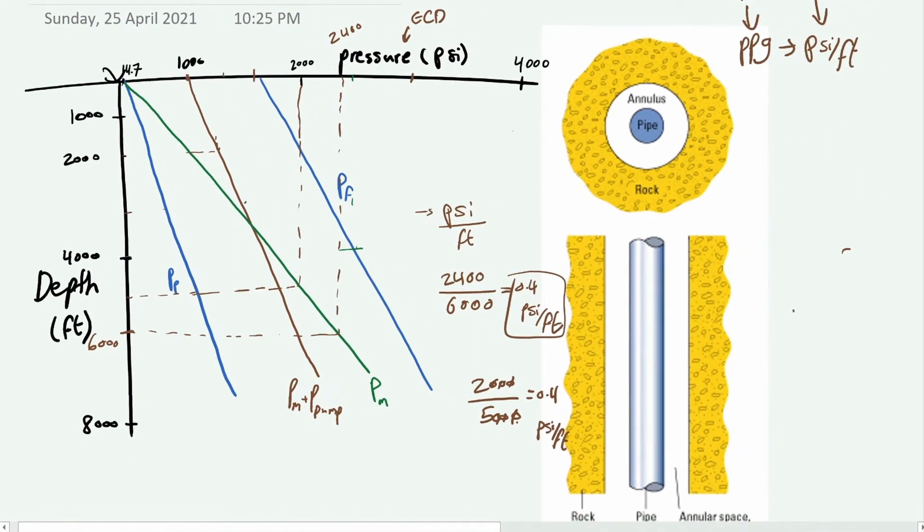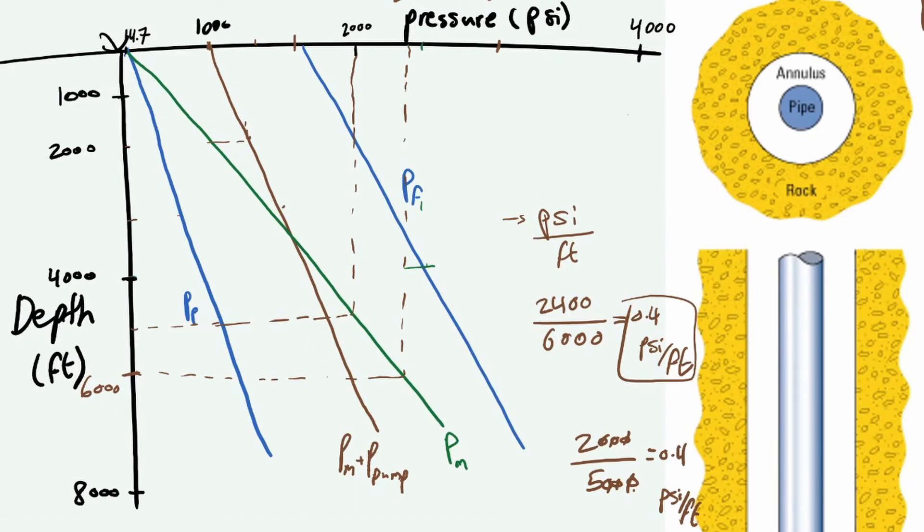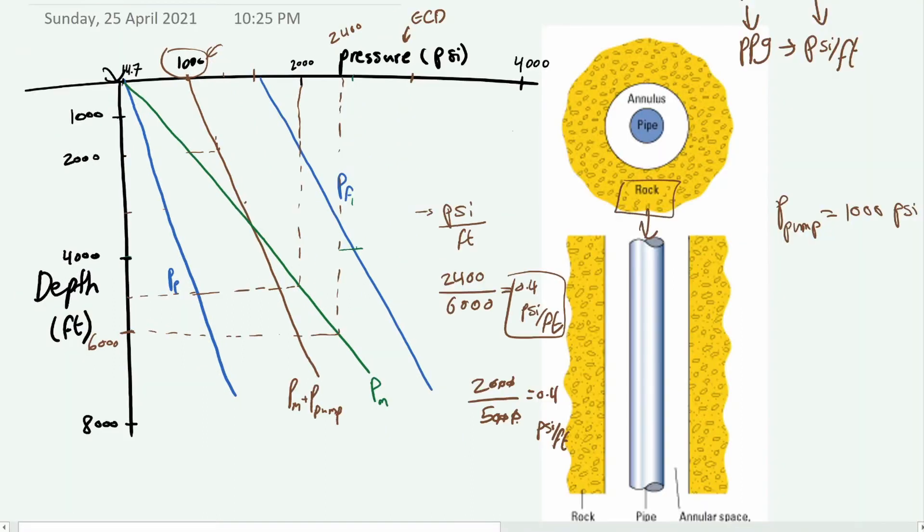This is not including the pump pressure. In your calculation you don't include the pump pressure, and you have to really focus on what the graph is showing you. In this green line you can see that it starts with 14.7, which is the atmospheric pressure. But this starts at 1000, which immediately tells you that the pump pressure is about 1000 psi.